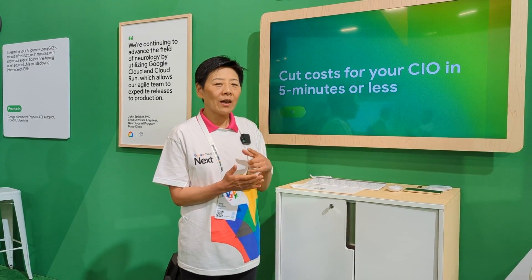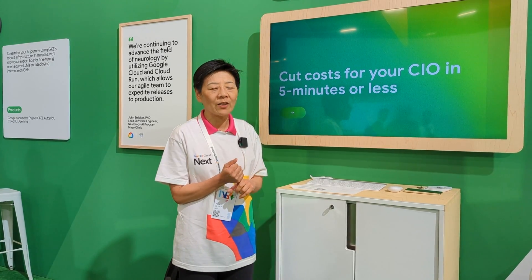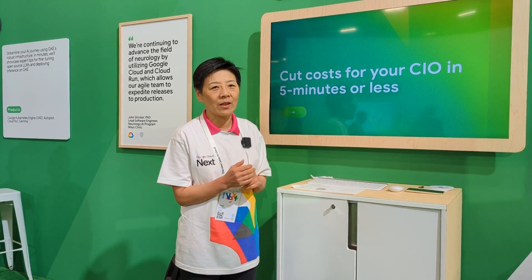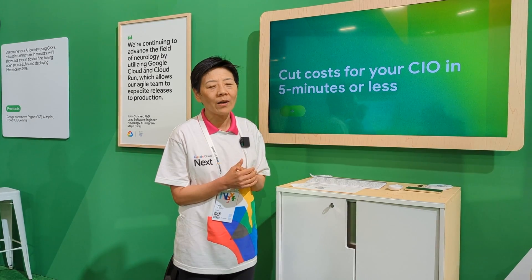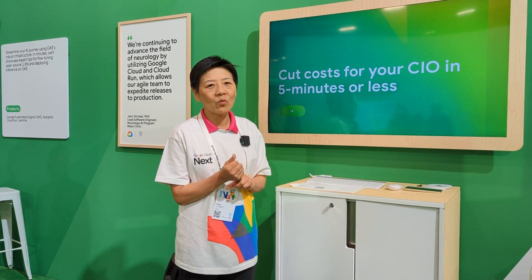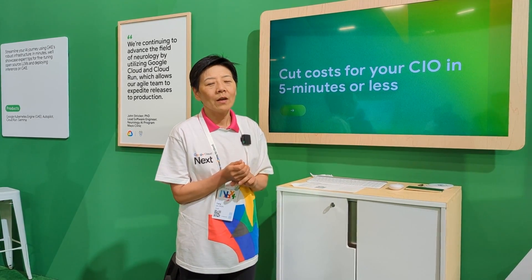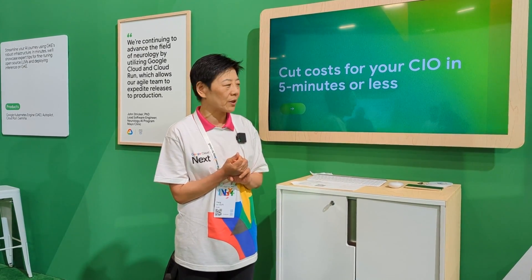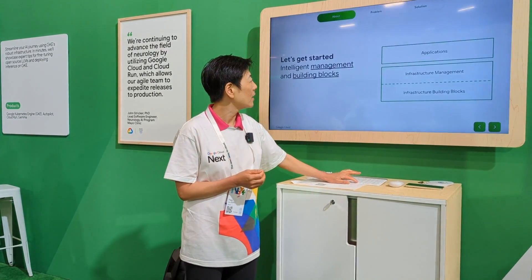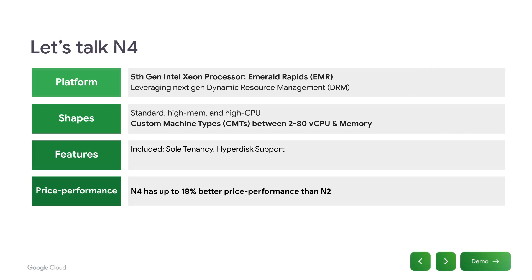There are three products I'm going to quickly mention and then we can take each of them. The first one is our newly announced virtual machines called M4. The second one is hyperdisk pool. The third one is managed instance groups. So let's take a look at our newly announced M4 instances.